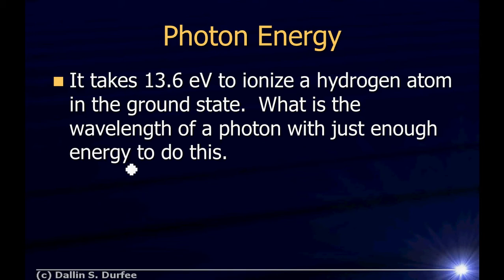How do we work this? Well, we say that the energy of a photon is just equal to Planck's constant times the frequency of the light. We want to know the wavelength, and we can write the frequency as just c over the wavelength. So it's just h times c over the wavelength.